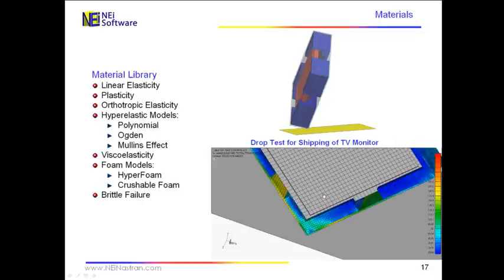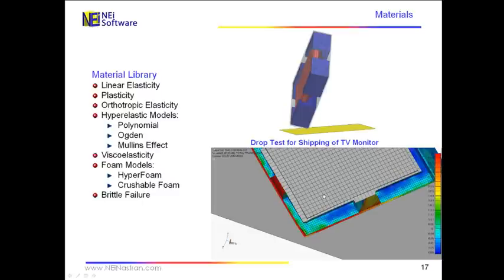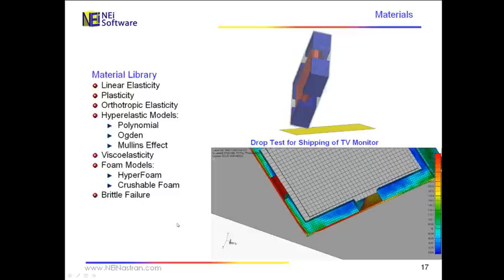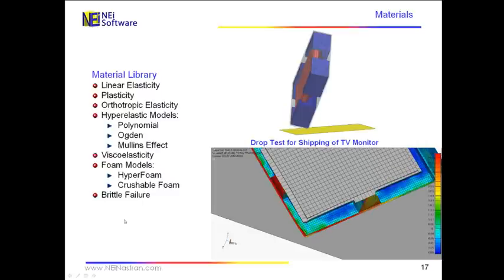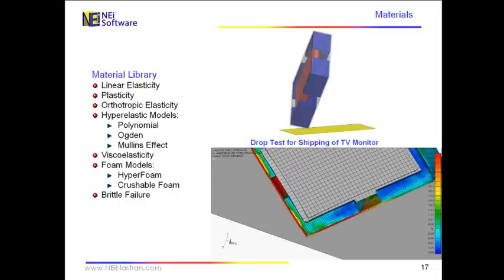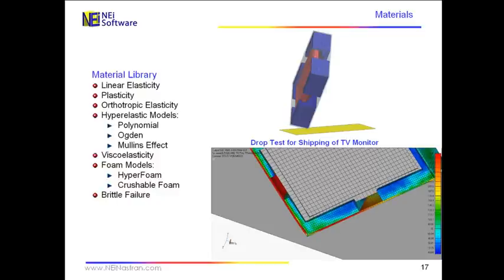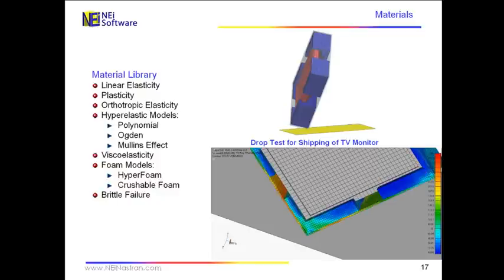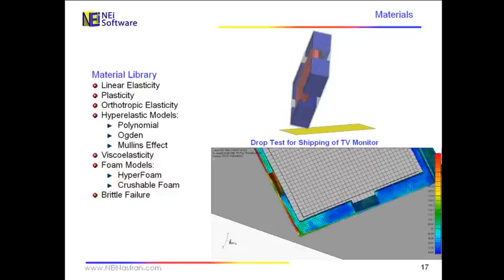Explicit dynamics models are extremely powerful for doing packaging studies. If you want to put things inside of a box and put styrofoam around them and package them up and then look at the effects of dropping them and the effects of shipping them, the explicit capabilities here are just absolutely perfect for doing those kind of calculations.